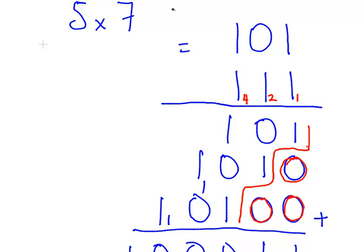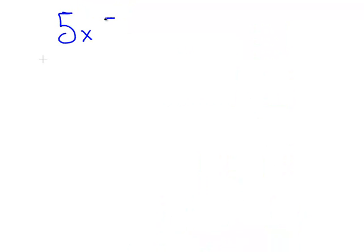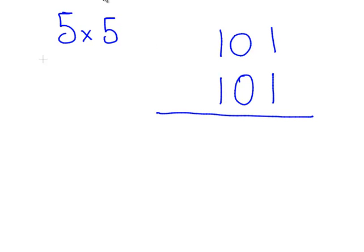Now, just say for argument's sake, we were multiplying 5 by 5. And that is 101 by 101. So let's just set up the left shifting here first off. So I am not going to put in a zero here, but in the next row I am going to put in a zero. And the next row after that, I am going to put in two zeros.